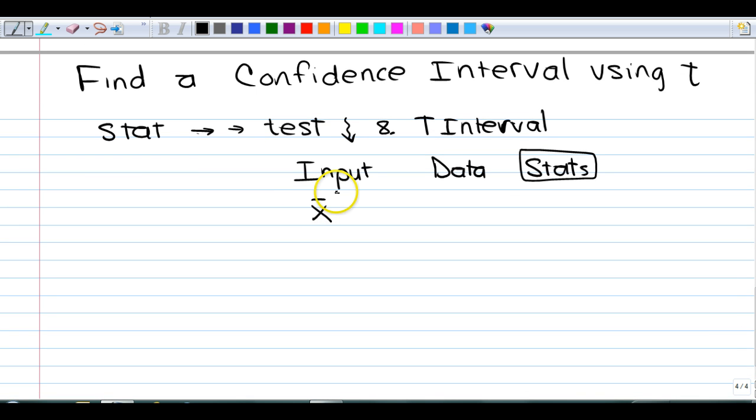This time, they want our sample mean first. Let's say our sample mean is 117. Then they want our sample standard deviation. Let's say it's 30. Then they want n. What should we make n be? How about 25?